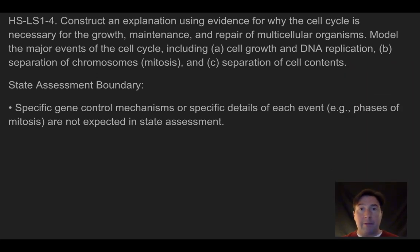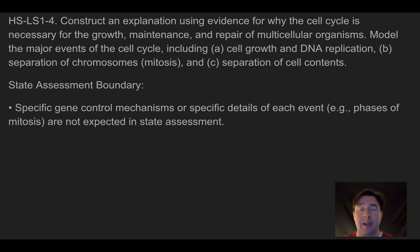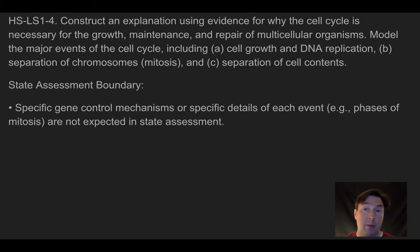Hopefully you can now construct an explanation using evidence for why the cell cycle is necessary for growth, maintenance, and repair of multicellular organisms. You should be able to model the major events of the cell cycle — specifically cell growth and DNA replication in G1, S, and G2 phases; separation of chromosomes during mitosis to maintain chromosome number; and separation of cell contents during cytokinesis at the end of M phase. Specific gene control mechanisms or detailed phases of mitosis are not expected, but you should understand the general trend of the cell cycle.